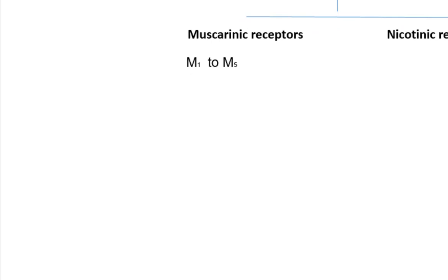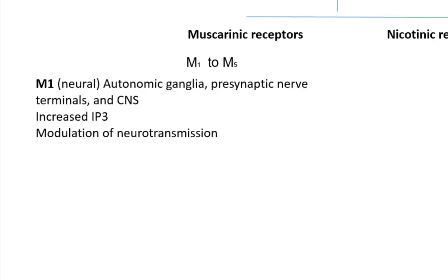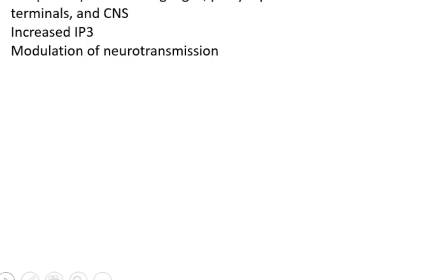M1 is coupled with GQ proteins and found in autonomic ganglia, presynaptic nerve terminals, and CNS. Activation stimulates phospholipase C, leading to the formation of inositol triphosphate (IP3) and diacylglycerol from membrane phospholipids, causing modulation of neurotransmission.